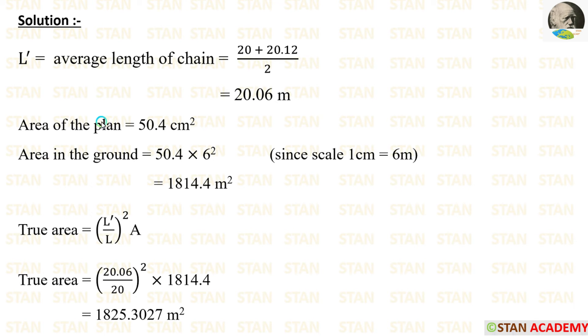Area of the plan is given, that is 50.4 centimeter square. We have to calculate the area in the ground. For that, we have to multiply the area of the plan with the scale. The scale is given in the question, 1 centimeter equals 6 meters. But when we apply the scale, we have to square it because the area is in meter square, so we have to be very careful. Here, we have to apply 6 squared. Finally, the area in the ground we are getting 1814.4 meter square.